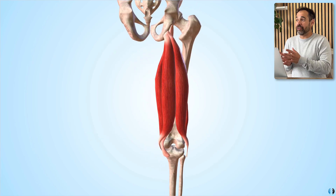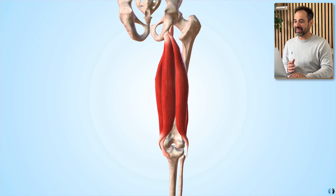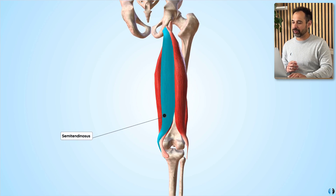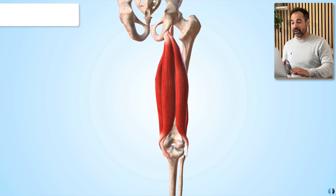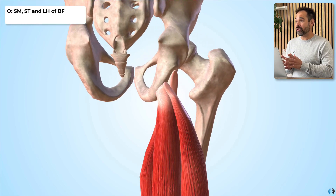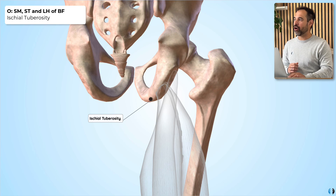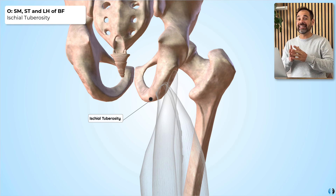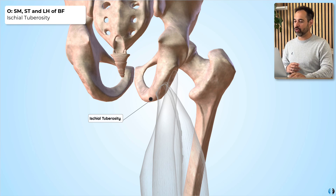In terms of the anatomy of semimembranosus and semitendinosus: semimembranosus is the most medial one at the point of the muscle belly, and semitendinosus is in the centre of the three. Looking at the origin of these muscles, semitendinosus, semimembranosus, and the long head of biceps femoris all originate from the ischial tuberosity — also referred to as our sitting bone. If you palpate the point of bone in contact with your chair, that is the ischial tuberosity.